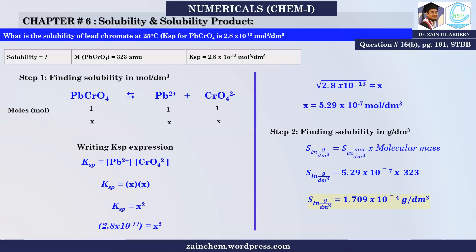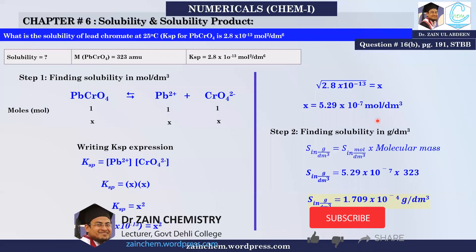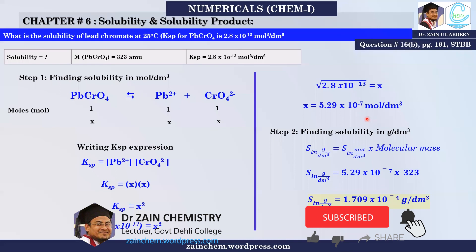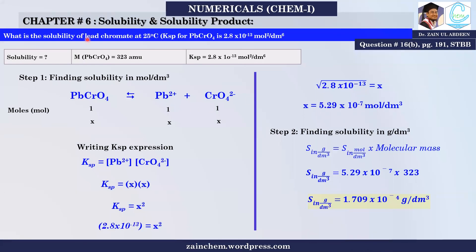When you find the solubility, you need to give it in the actual unit, which is gram per decimeter cube. If the question asks for moles per decimeter cube or molarity, you stop there. But if it asks for solubility in the actual unit, you must convert to gram per decimeter cube.